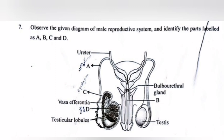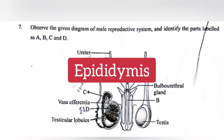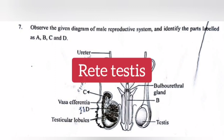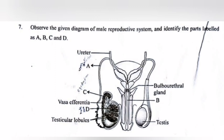Question 7: Observe the given diagram of the male reproductive system and identify the parts labeled as A, B, C, and D. Answer — A: Vas deferens, B: Urethra, C: Epididymis, D: Rete testis.